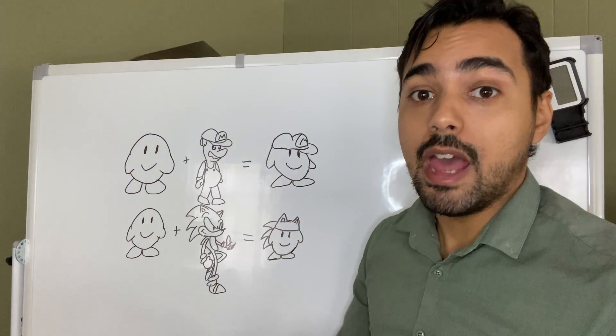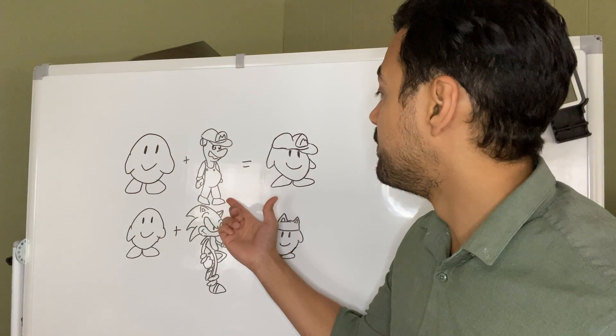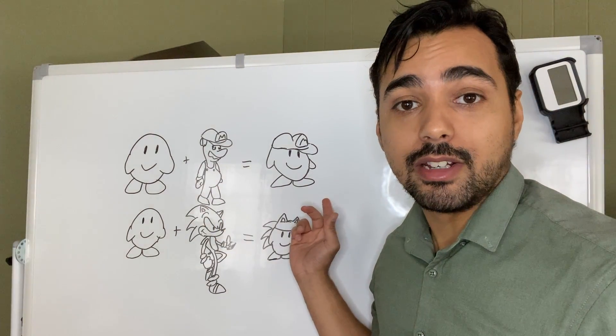Onto the whiteboard. Think of it like Kirby. Anytime Kirby gains the power of somebody, he ends up dressing like that character.